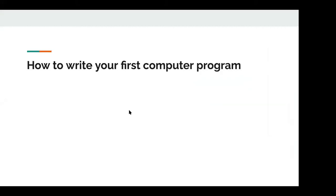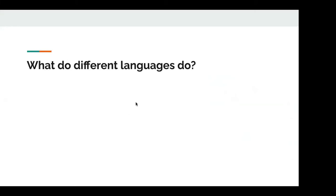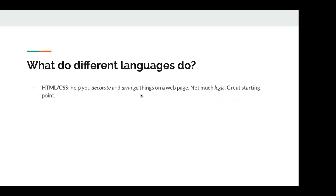That's about halfway through the talk. Now I want to talk about making a very simple computer program and how you might get started. This is the number one question I get asked. Let's quickly talk about what different programming languages can do for you. A really common starting point is HTML and CSS — some people won't even call it a programming language, it's a markup language that helps you decorate and arrange things on a webpage. There's not really much logic, which is why people don't call it a programming language, but it's a great starting point because it helps you create visual things, which makes it easier to maintain motivation.